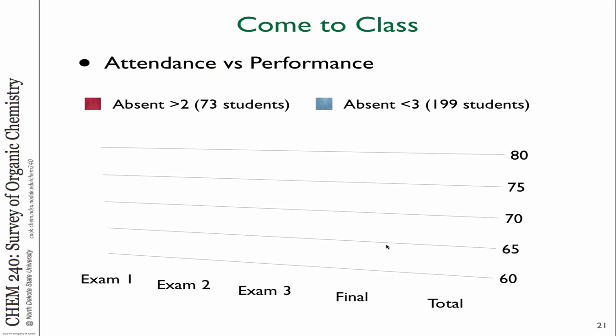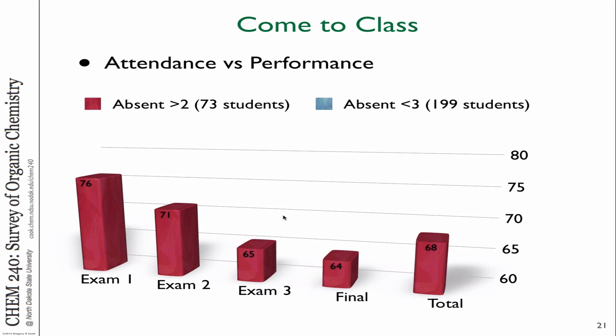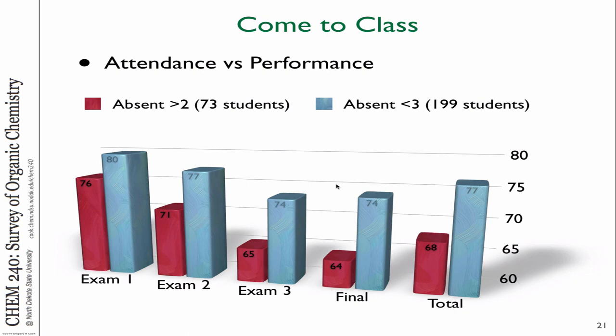If you look at the grade distribution across three exams and a final exam, students who were absent more often saw their average grades start at about 75 and continually go down, with their total grade ending up somewhere below 70. Students who regularly came to class showed a full grade difference. Overall grade was more than 10 points higher than those students who didn't come to class. So if you think you can not come to class and still learn it, the data doesn't support that. Please come to class.